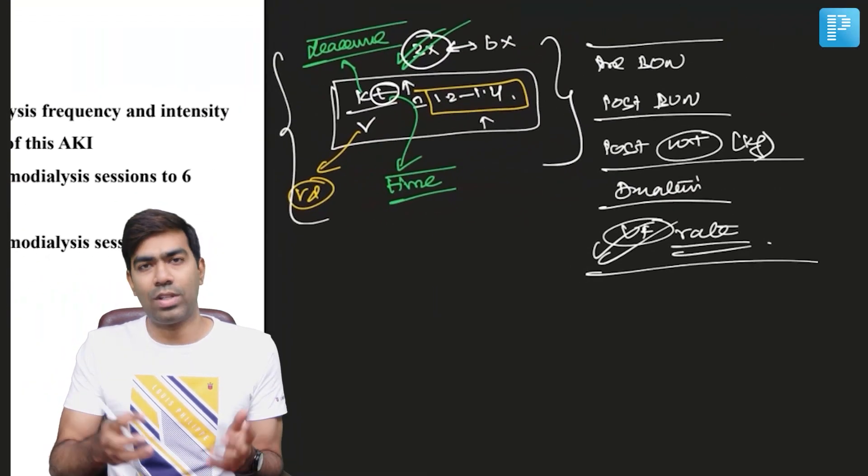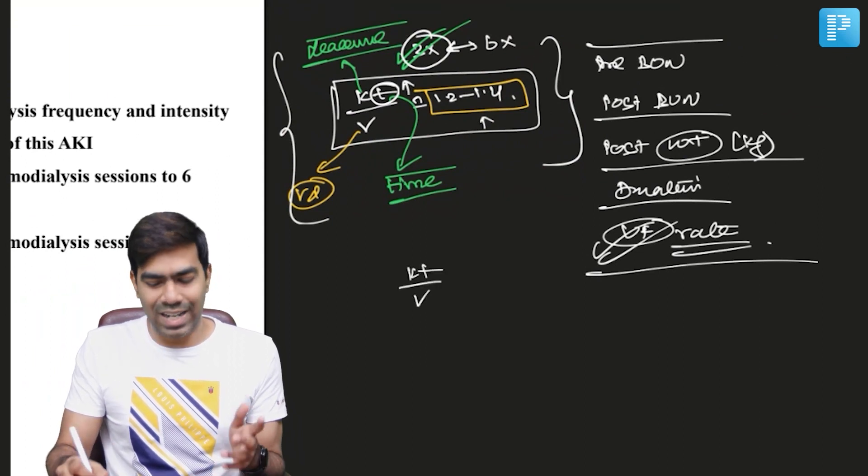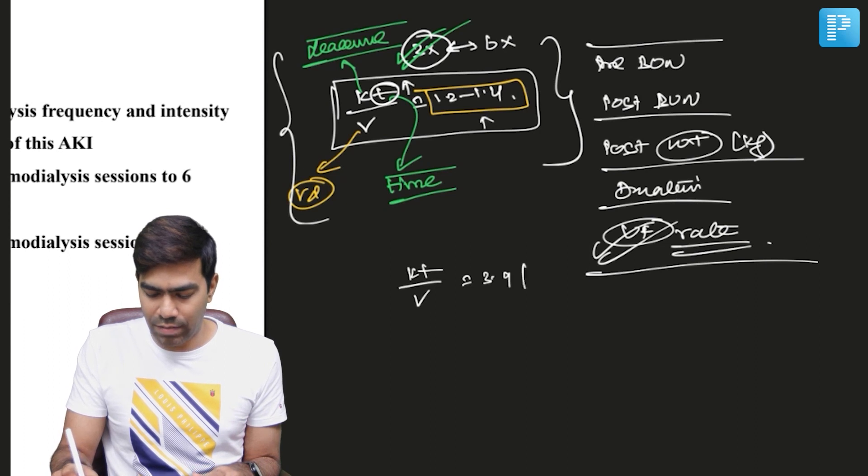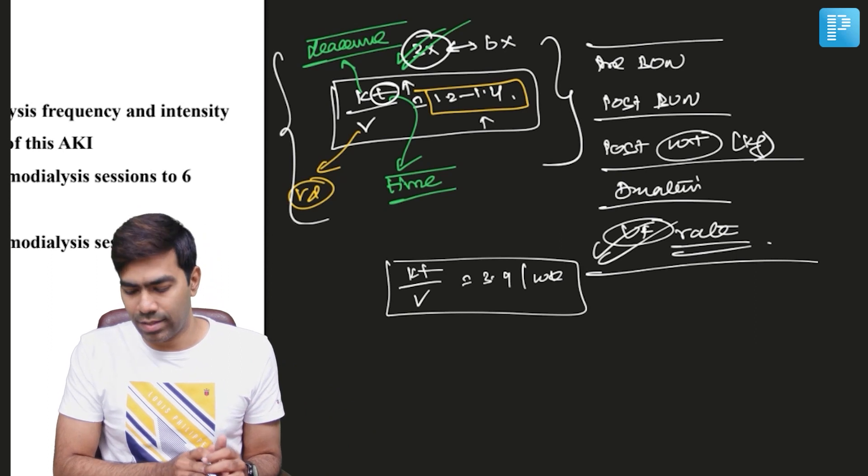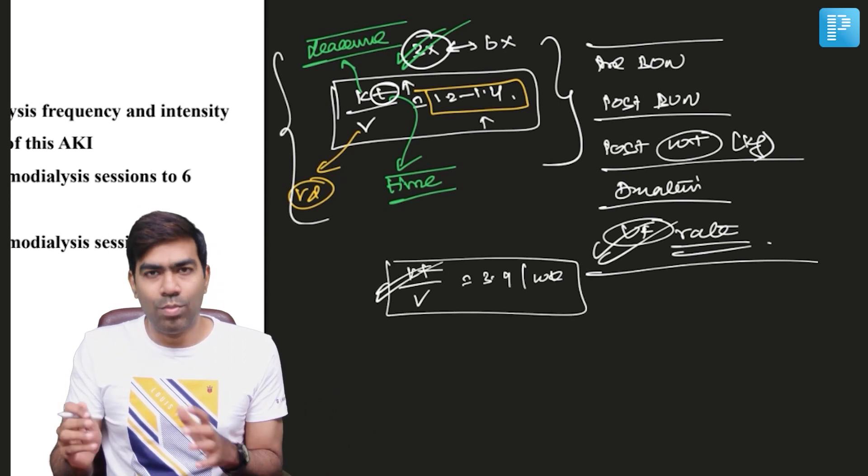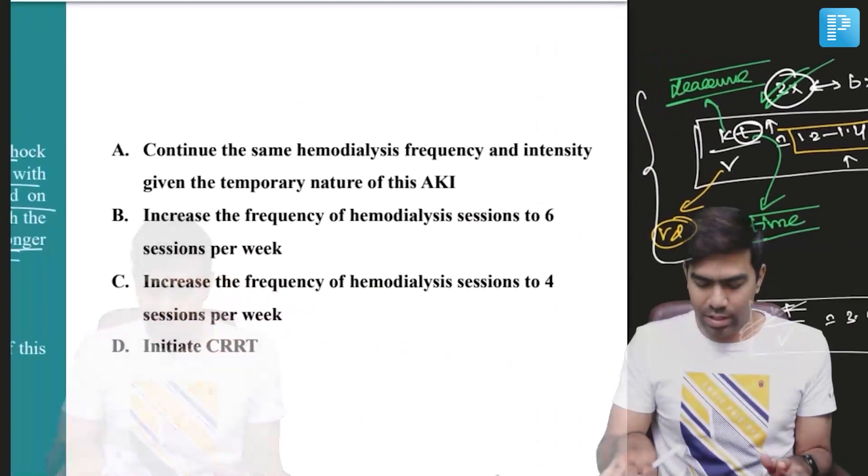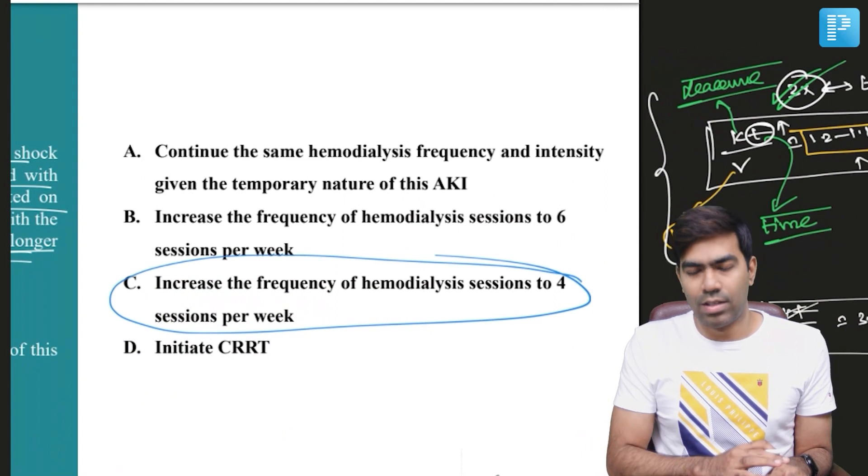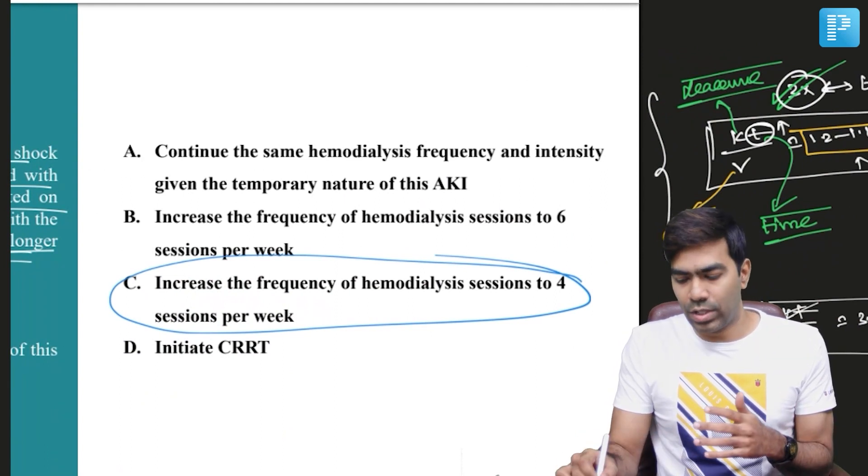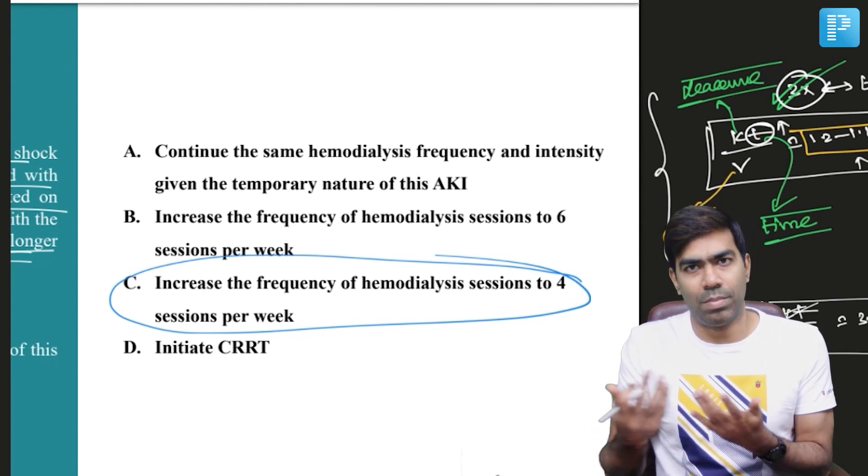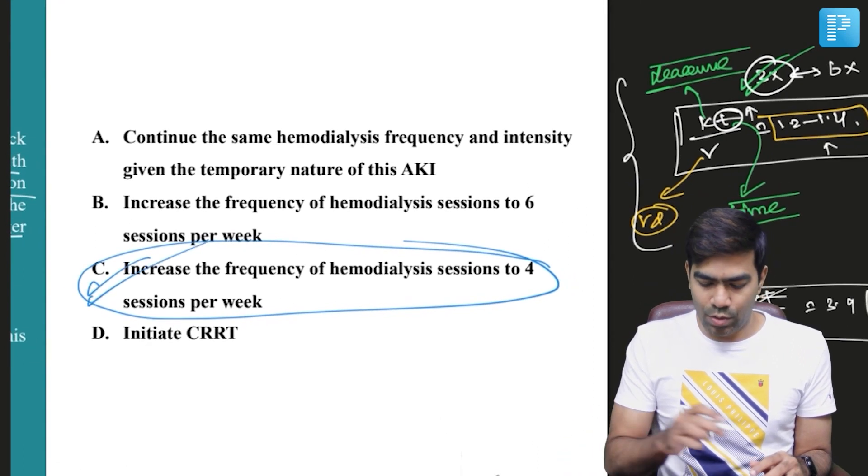So what will be the bailout in this kind of situation? The bailout will be to maintain a KT/V of at least 3.9 per week. This is also a KT/V recommendation in case of exceptional situations like this. To maintain a cumulative KT/V of 3.9 per week, you can make the patient go for dialysis of maybe four sessions per week. That can improve the cumulative KT/V per week to around 3.9. That will be the right answer for this particular question.